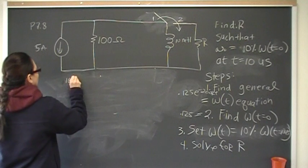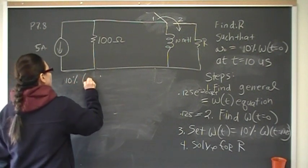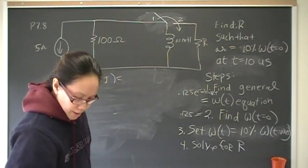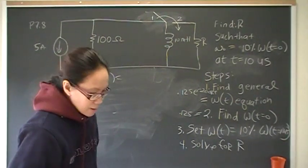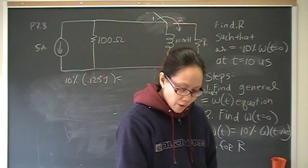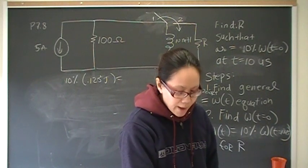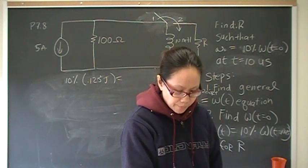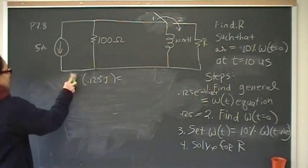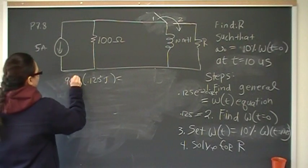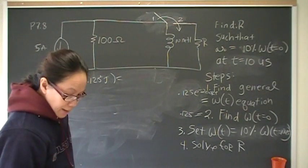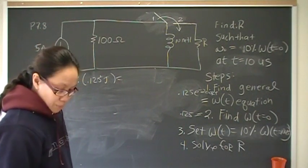So 10% of 0.125 joules is times, let me see. Oh, my bad, my bad, it says, find the value of R so that 10% of the initial value stored, 10% is dissipated, so 90% is left. Sorry, my bad, 90%.